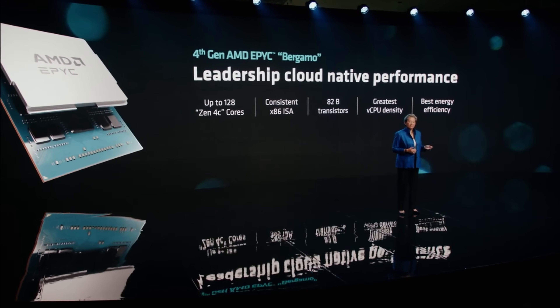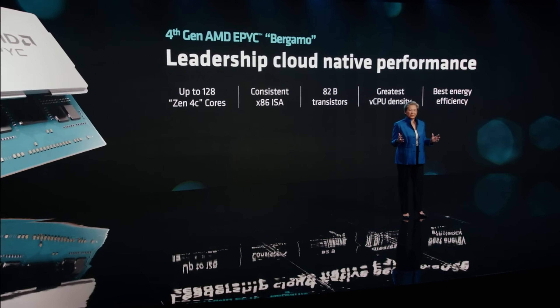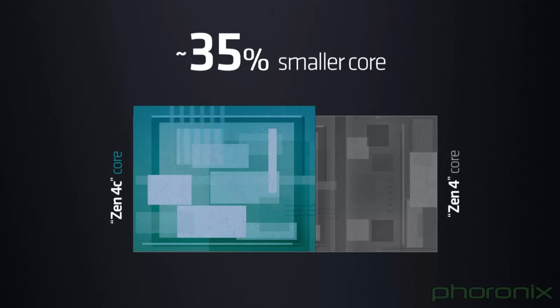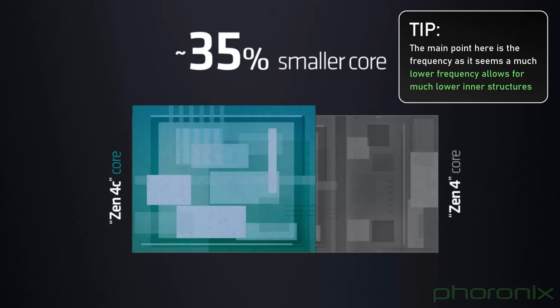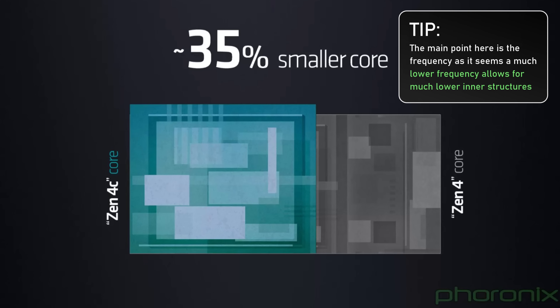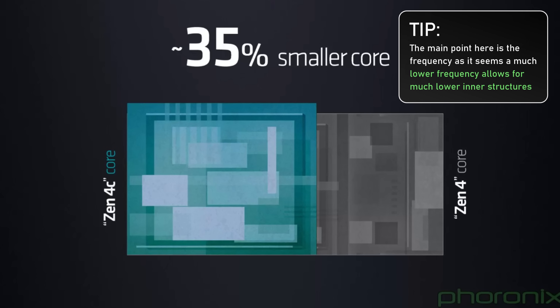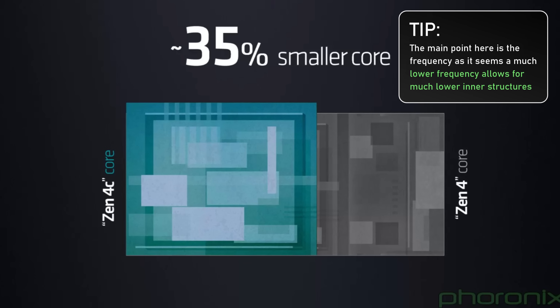If you're wondering how AMD can fit two Zen 4c cores in the place of one Zen 4 core while using the same process node and architecture — it's simpler than it looks. Having half the cache already saves space, but the major factor is the reduction from roughly 5.5 GHz down to around 3 GHz. With lower frequencies, the internal structures can be made much smaller because you don't have to worry about interference or power leakage that comes with higher frequencies.